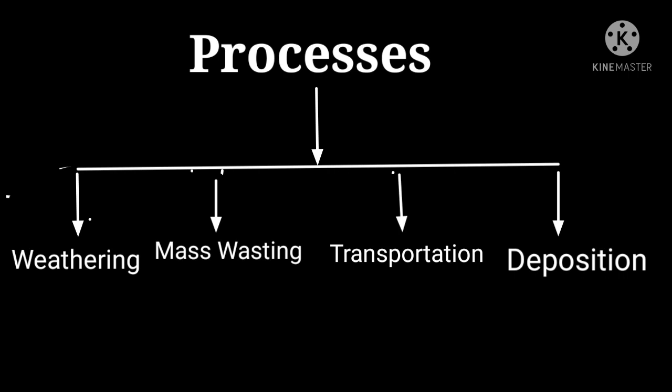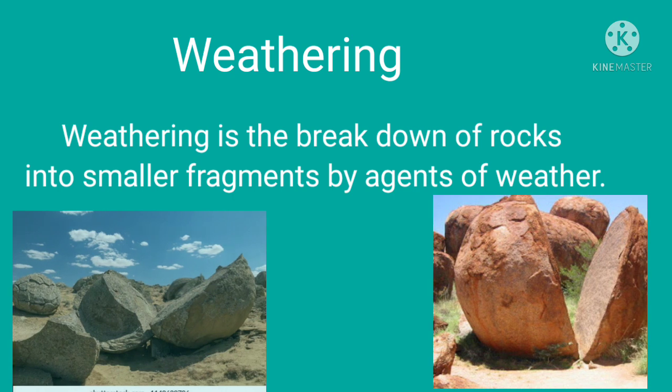Now we'll discuss the different processes involved in exogenic forces. The first is weathering — the breaking down of rocks into smaller fragments by the static agents of weather, such as wind, running water, or human activities. The next is mass wasting — movement of soil or rock mass from one region to another mainly due to gravity. Then there is transportation of eroded material, and lastly deposition, where transported material is deposited in low-lying areas.